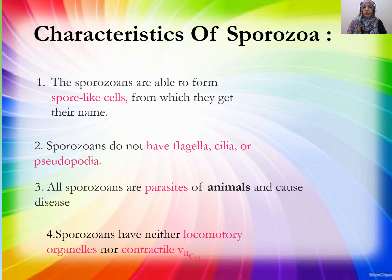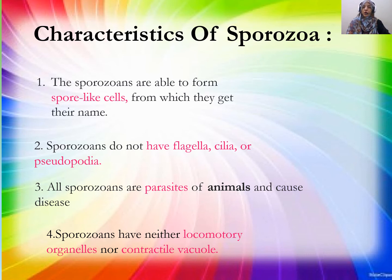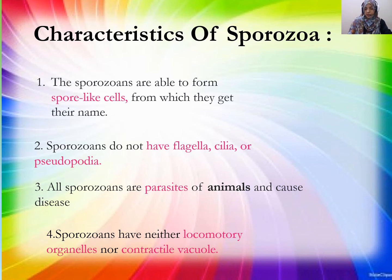They have no motor organs or contractile vacuole. They don't move. The contractile vacuole — which we discussed earlier — when there is excessive water in the body, it stores water and then when full, it attaches to the body membrane and expels the water. Sporozoa lack contractile vacuoles and motor organs.